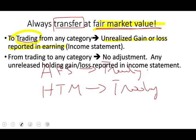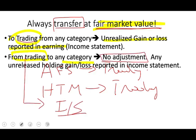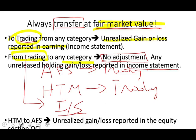What happens if we're going FROM trading to another category? When an investment is held in trading, everything goes into the income statement, so everything is already recognized. That means we have no adjustments — it's reported at fair value and any unrealized holding gain or loss is already in the income statement, so no adjustment is necessary.